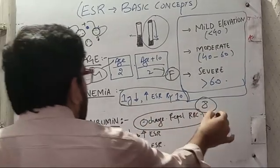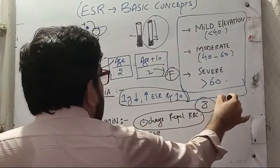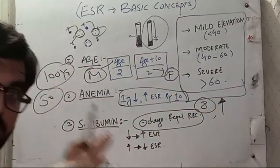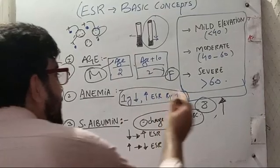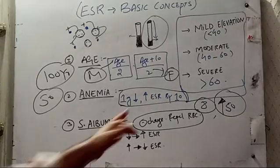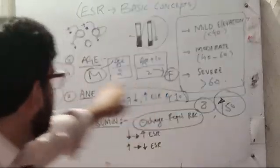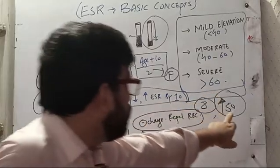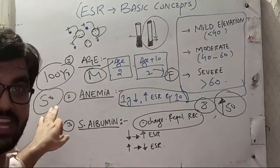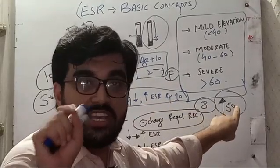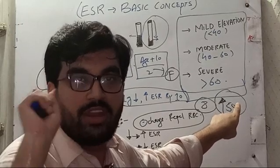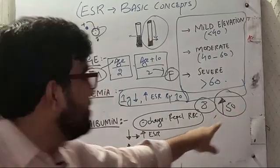You have to keep this in mind: if hemoglobin is decreased by 5, the ESR will increase by 50. That is a very big number. You should not take these figures for inflammation. This is the expected increase in ESR, not inflammation. Do not start this patient on steroids or NSAIDs. This is not inflammation, this is anemia.